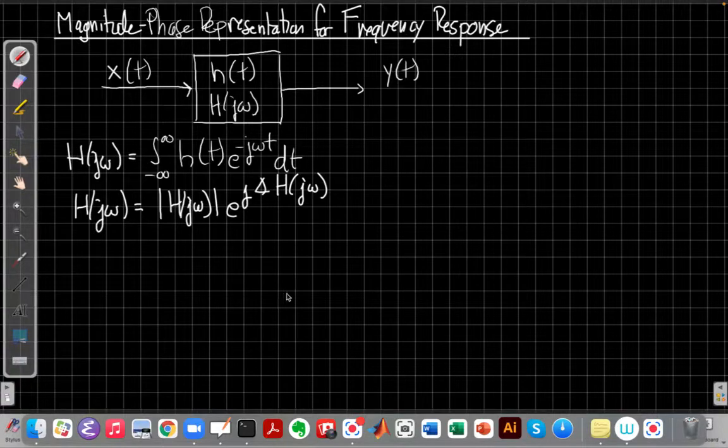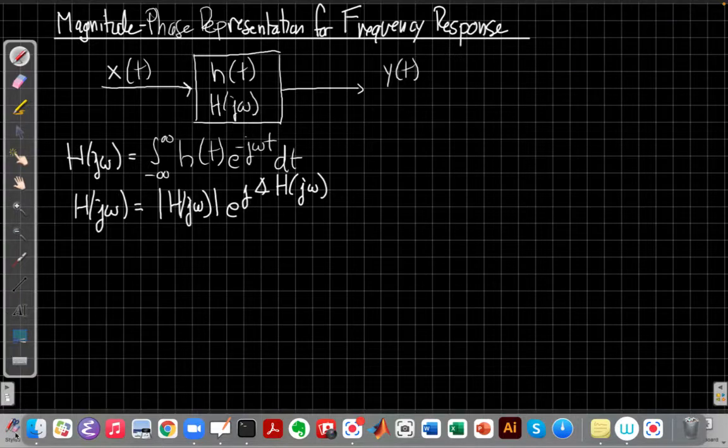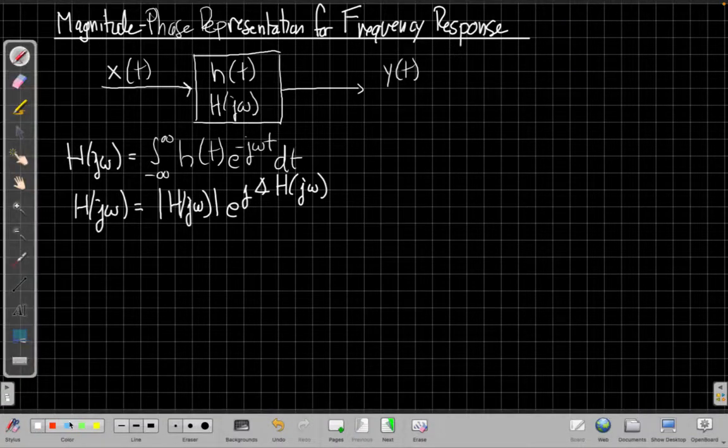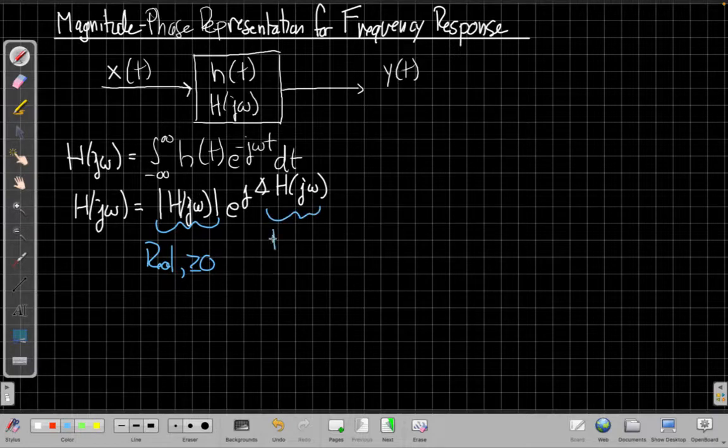So when I write it in this form with magnitude and phase, we have the h of j omega is the magnitude, which is always a real function and generally must be positive. So this is a real function and it's greater than or equal to zero.